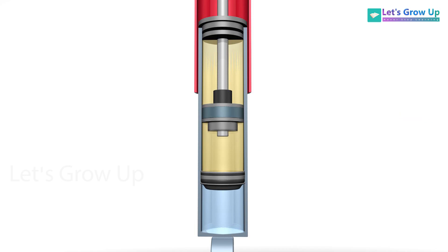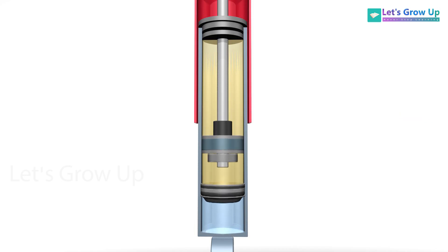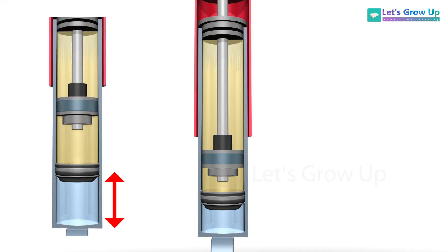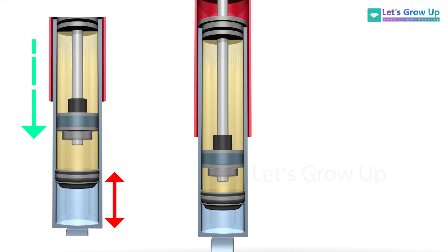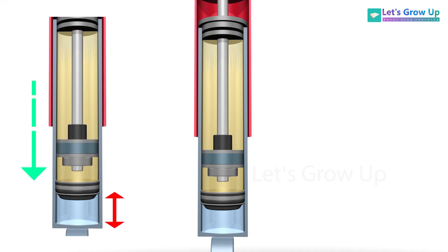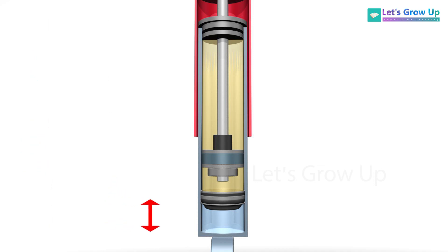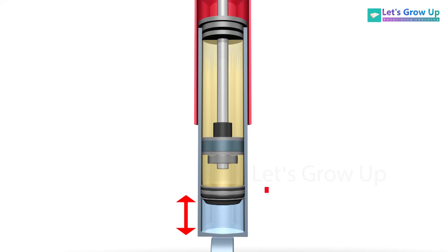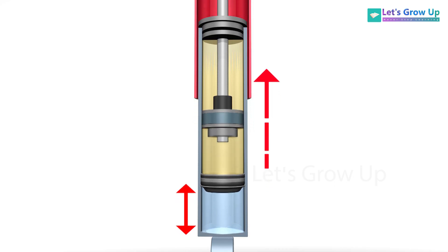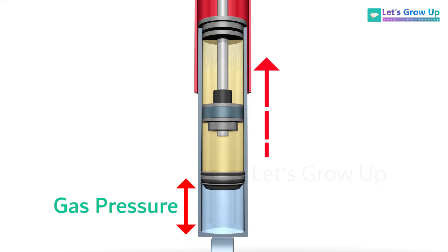When the shock absorber is compressed, the piston rod enters the oil cylinder and the oil is compressed against the gas, causing the floating piston to move and reduce the volume of the chamber. When the shock absorber is extended, the rod lifts within the working chamber and reduces the gas pressure, which causes it to rebound.